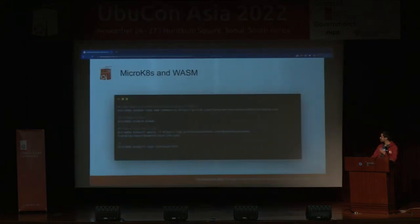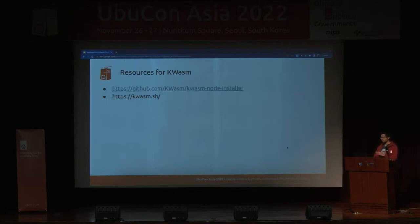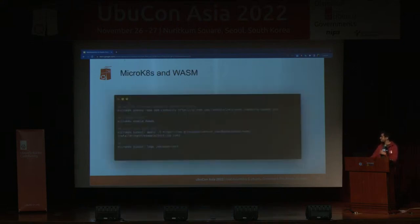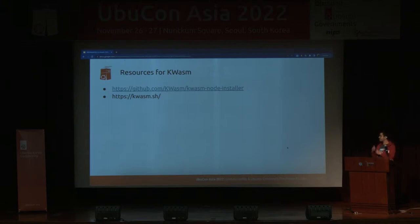If you're interested, you can take a look at these links to run your WebAssembly workloads with the help of Kubernetes. Take a look at the k-wasm.sh project — that will walk you through how to install it and add it to your Kubernetes setup. First, you add the community demo and enable the k-wasm project, and then you'll be able to run your WebAssembly workloads. You'll be able to manage both your Linux Ubuntu containers and WebAssembly apps, and manage those workloads with k-wasm.